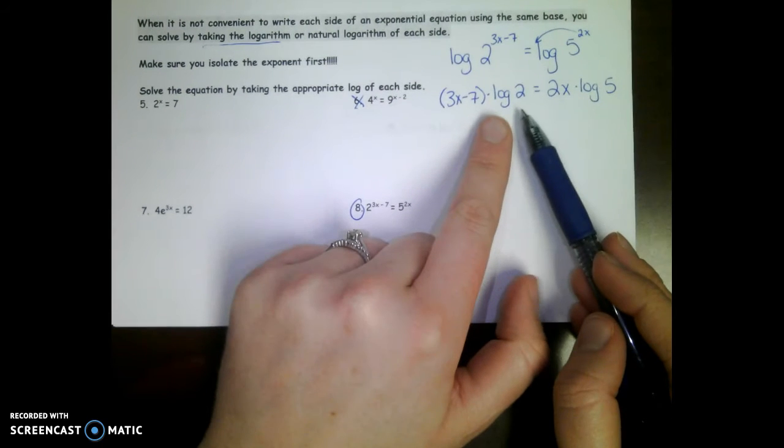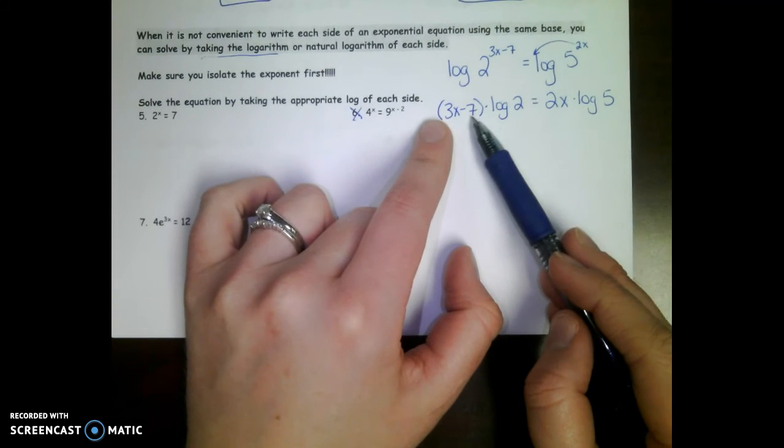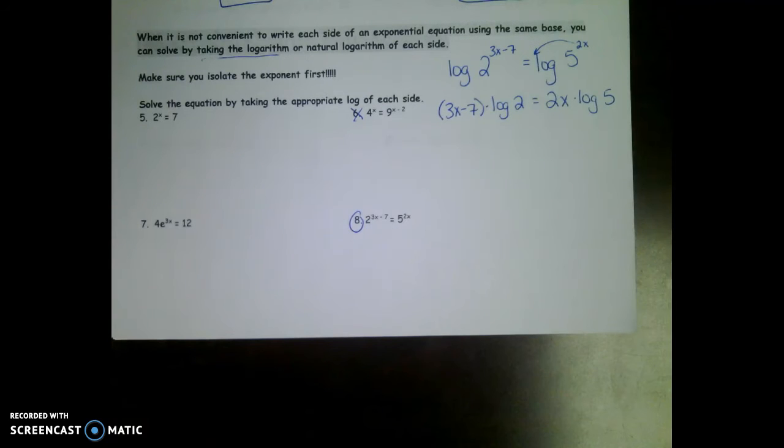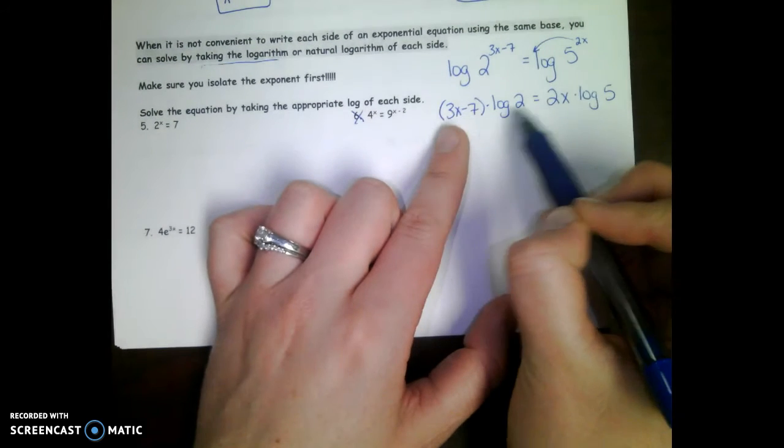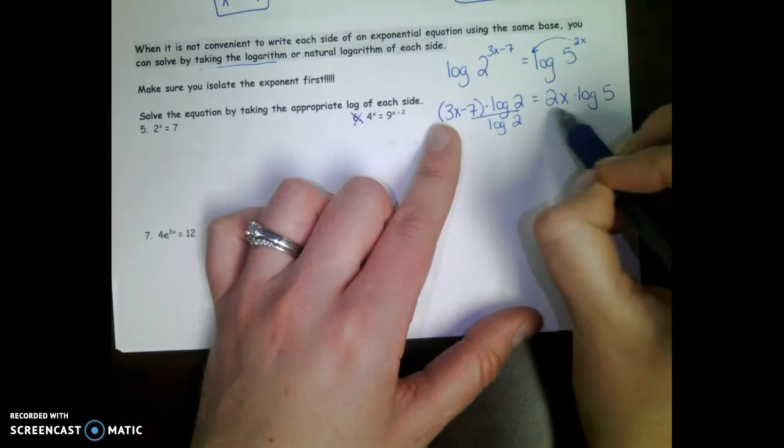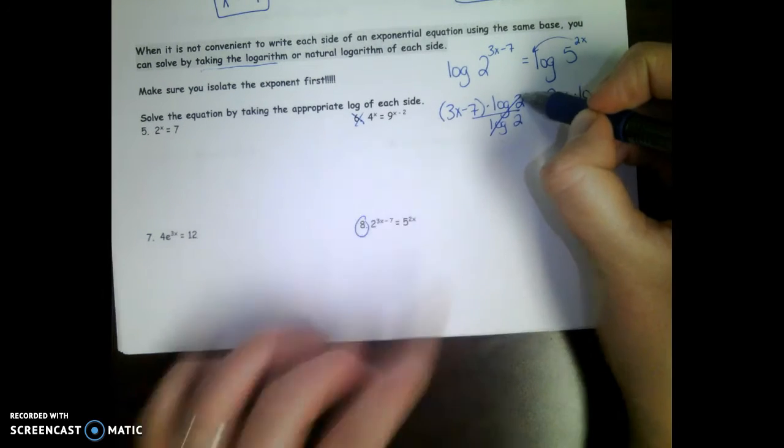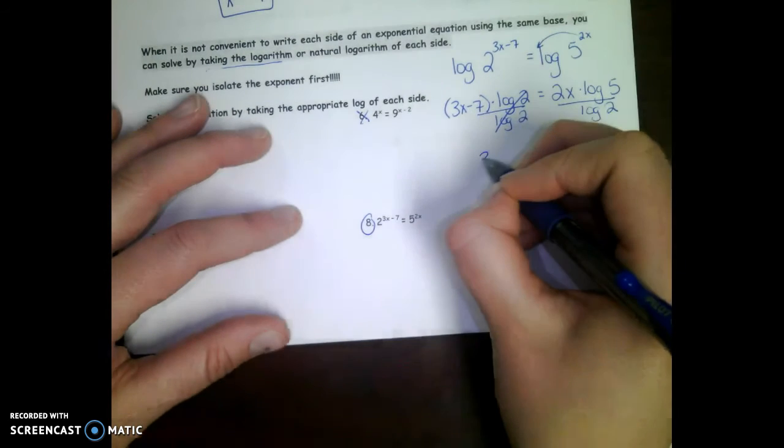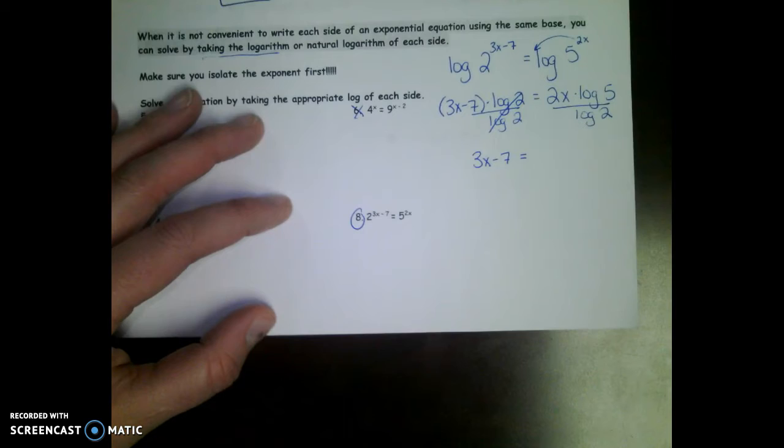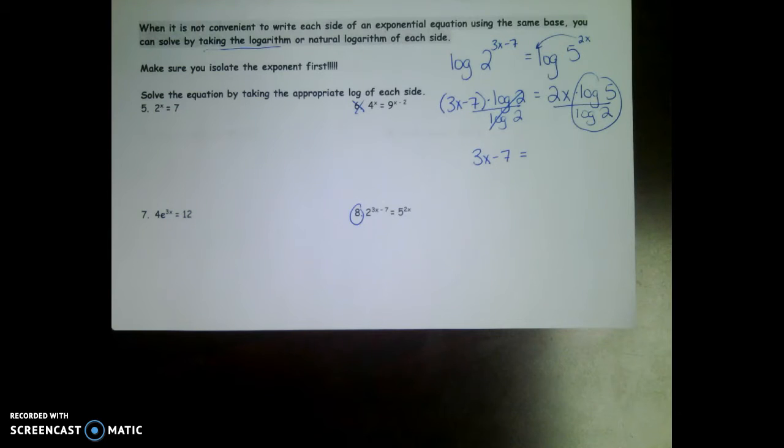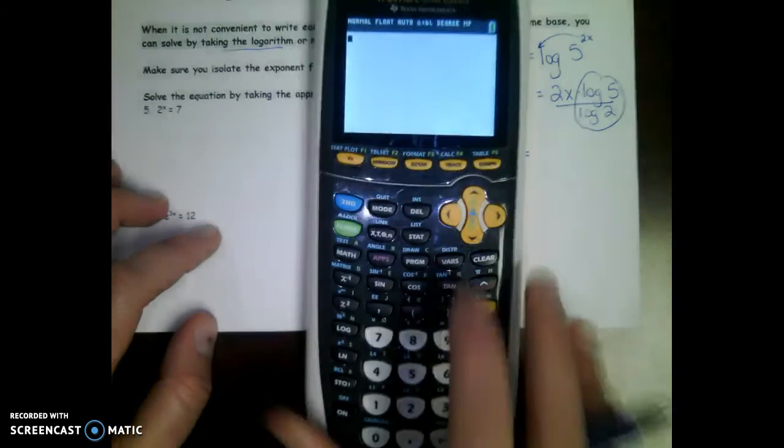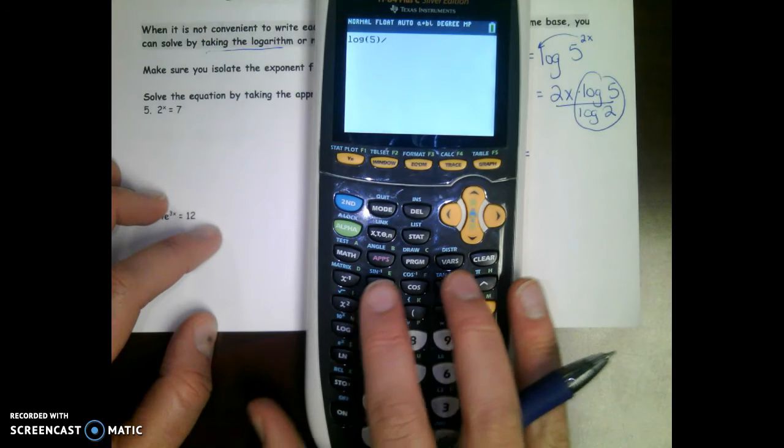This becomes 3x minus 7 times the log of two and 2x times the log of five. This is where that property really comes in handy because even though our bases don't match, it allows us to bring those x's down out of the exponent. Now if I actually punch log of two into my calculator, it's going to be a crazy decimal and then I'd have to distribute that crazy decimal. I prefer to contain my decimals, so here's my strategy. Which side looks more complex, the left side or the right side? The left side looks more complex, so let's make it less complex by taking that log away. Divide both sides by the log of two.